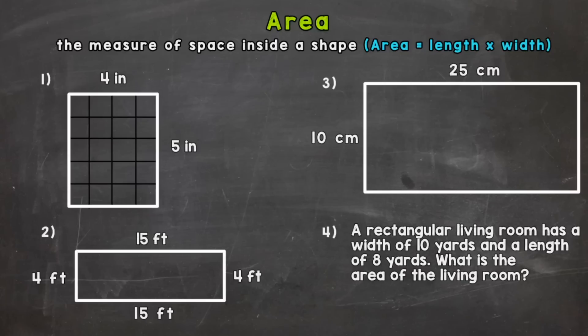For number one we have a four by five inch rectangle. So the first thing we need to do in our calculating area problem here is write out our formula. So area equals length times width.